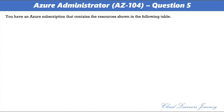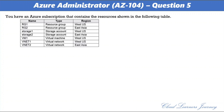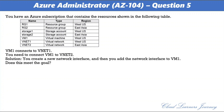Question 5. You have an Azure subscription containing resources: RG1 in West US, RG2 in East Asia, Storage1 in West US, Storage2 in East Asia, VM1 in West US connected to VNet1 in West US, and VNet2 in East Asia. You need to connect VM1 to VNet2. The proposed solution is to create a new network interface and add it to VM1. Does this meet the goal? Answer: No. You should delete VM1, recreate VM1, and then add the network interface to connect it to VNet2.